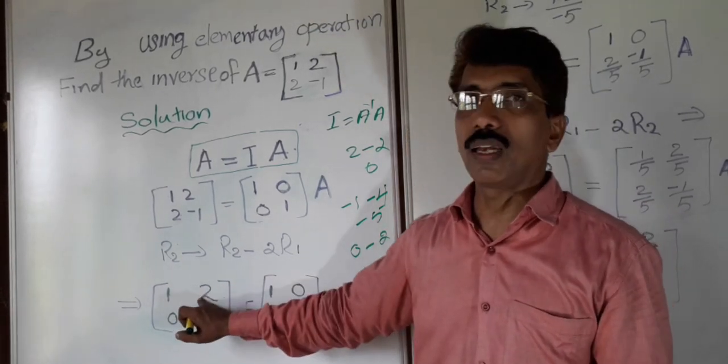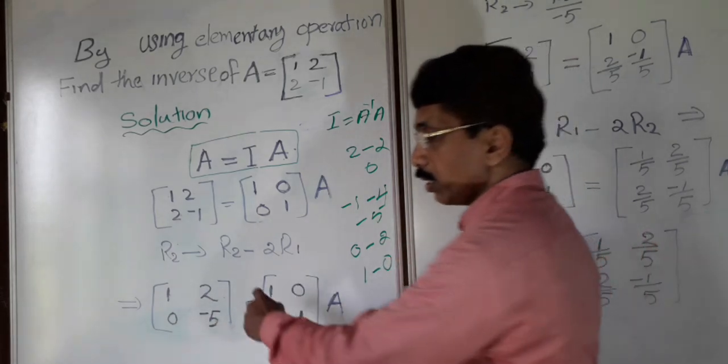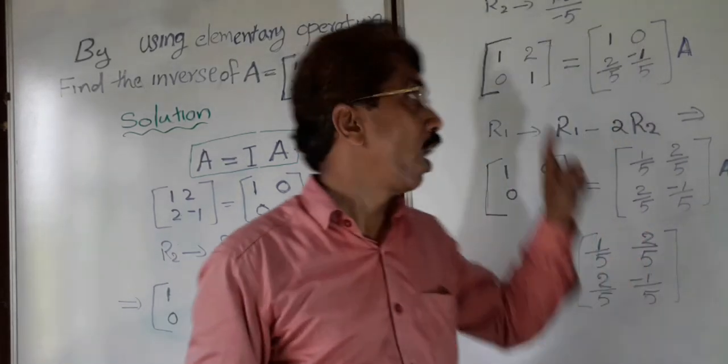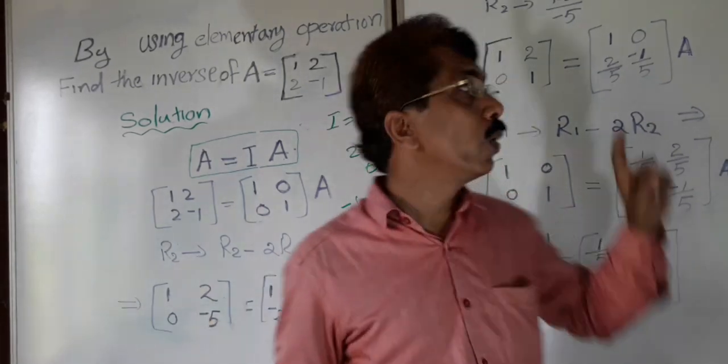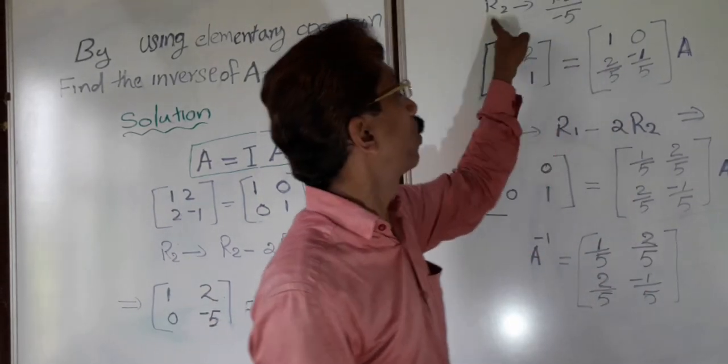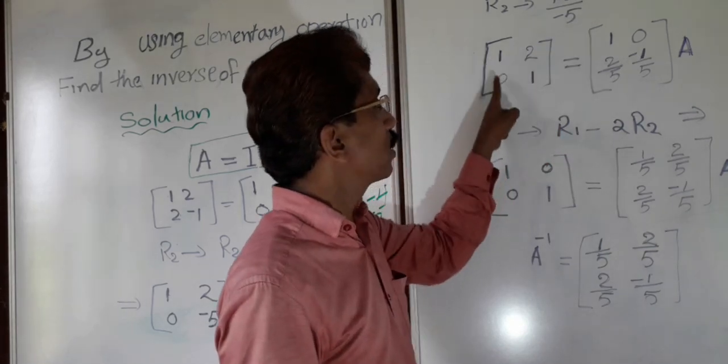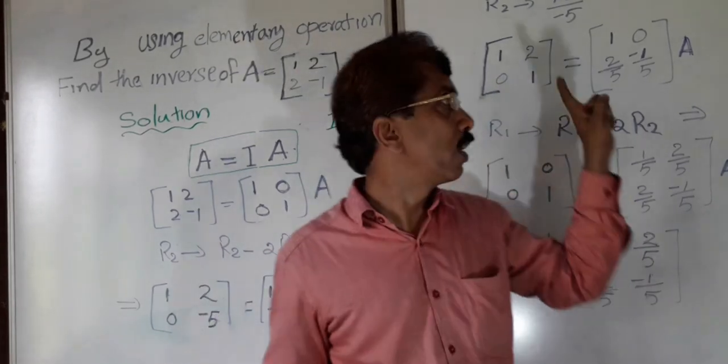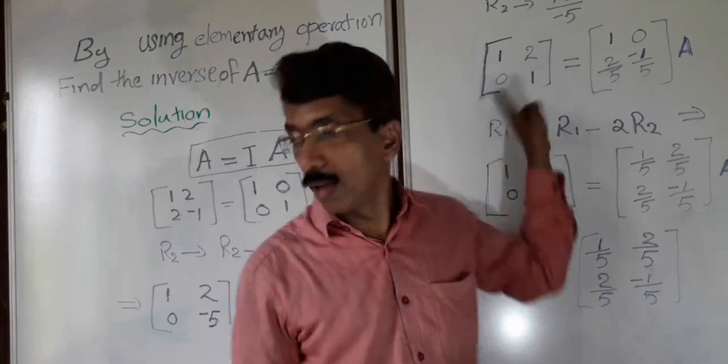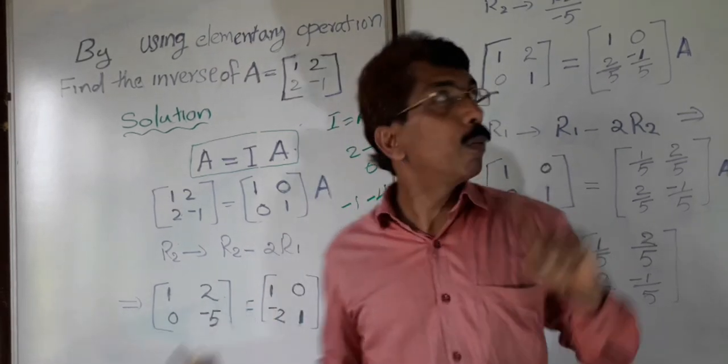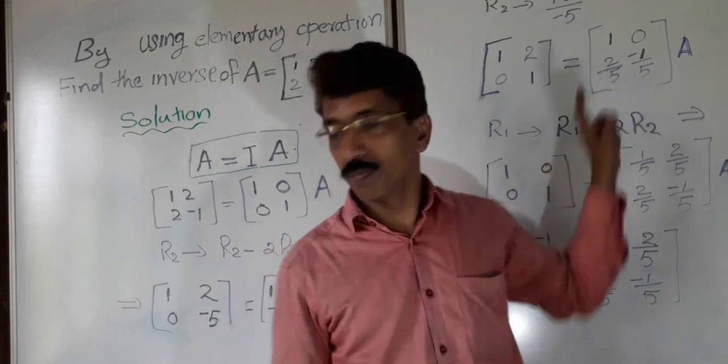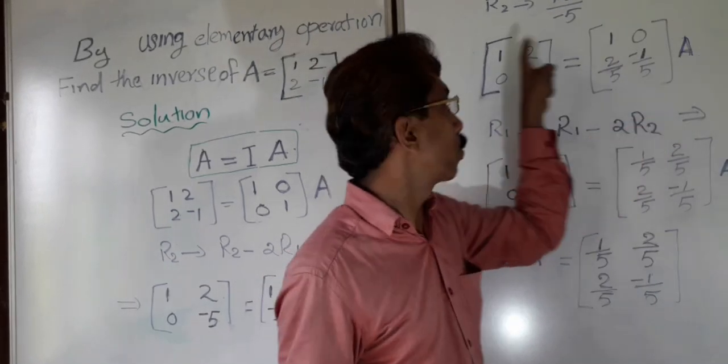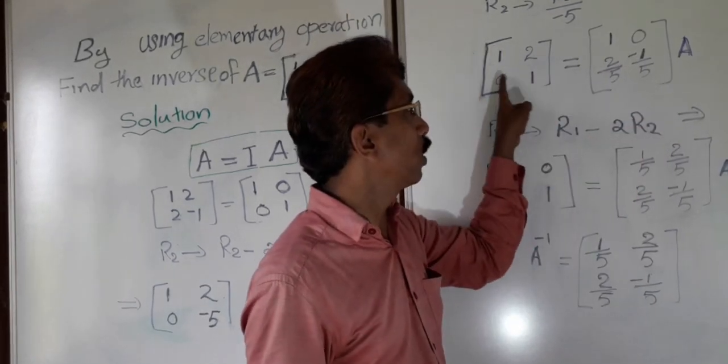Now I have to change this negative 5 to 1. How to change negative 5 to 1? You divide negative 5 with negative 5, you will get 1. So I am making R2 completely, this row, divided with negative 5. R2 changes to R2 by negative 5. So 1 here, 0 here. 0 by any number equals 0. Negative 5 by negative 5 equals 1. Negative 2 by negative 5 equals positive 2 by 5. 1 by negative 5 equals negative 1 by 5. I got 1, 0, 1 this way.